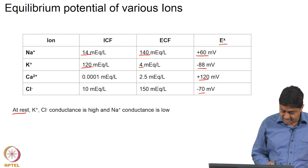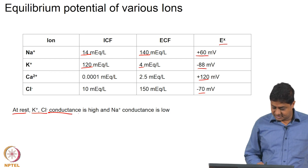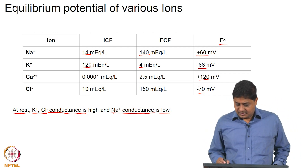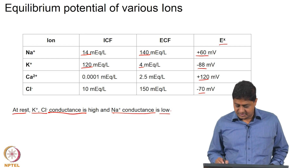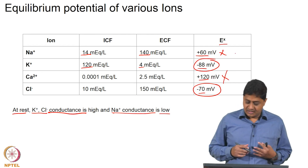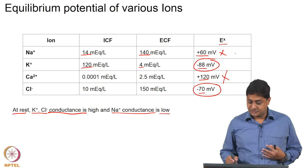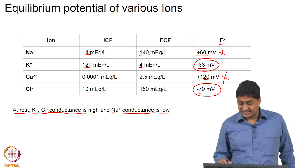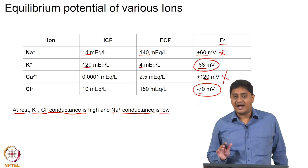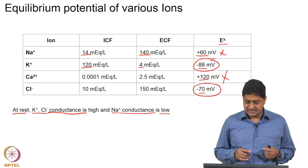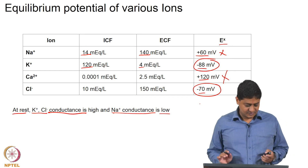At rest, potassium and chloride conductance is relatively high and sodium conductance is relatively low, and that makes sense. Usually then the membrane potential is closer to the potassium and chloride equilibrium potential values, but not to the sodium values. In other words, the membrane potential is closer to minus 70 or minus 88 millivolts. What happens at off-rest periods is of interest for us, but at rest this is the situation.